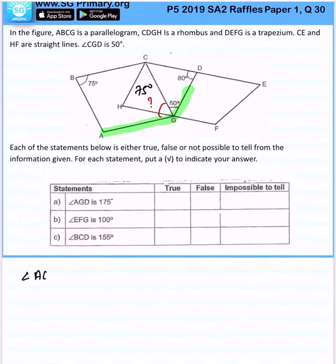So therefore, angle AGD will be 75 degrees plus 50 degrees, which is 125 degrees. So therefore, this is false.